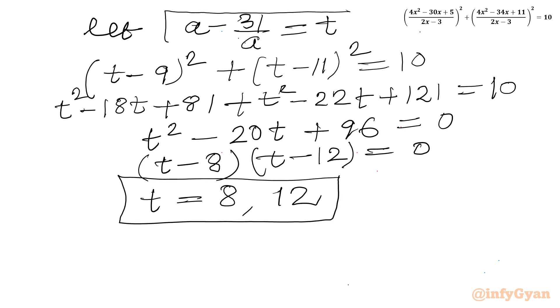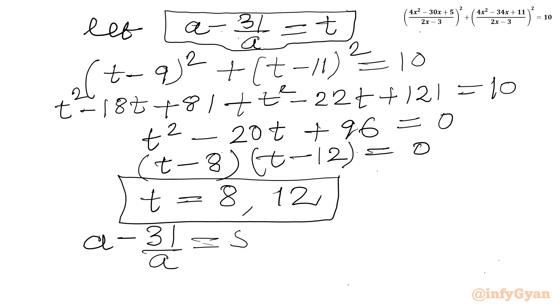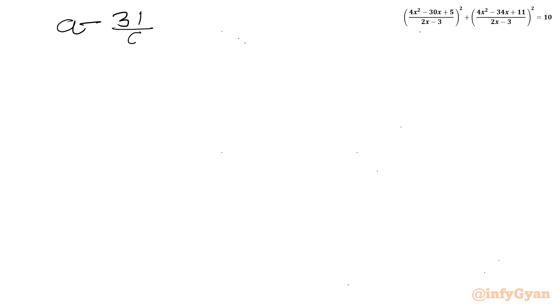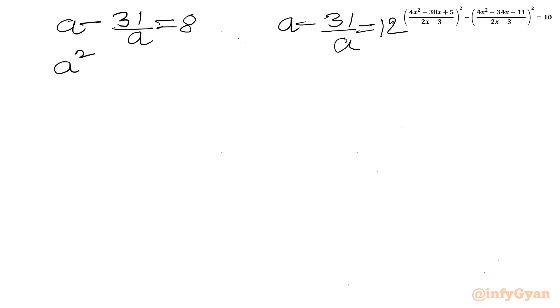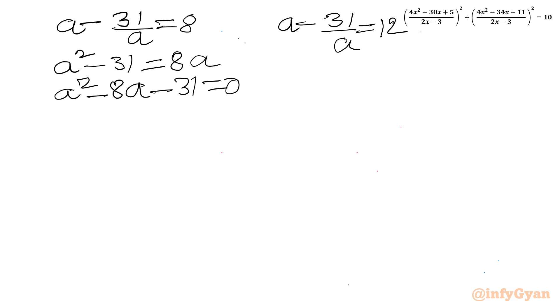Now T was our substitution a minus 31 over a. So I can write a minus 31 over a equal to 8, and a minus 31 over a equal to 12. Let us solve both equations. Multiplying both sides by a: a² minus 31 equals 8a, or a² minus 8a minus 31 equals 0. And for T = 12: a² minus 12a minus 31 equals 0.